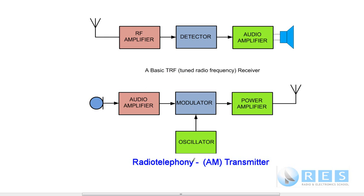Let's just go over the AM transmitter again. Audio comes from the microphone and goes into the modulator. An RF signal from the oscillator also goes into the modulator. The AF, the audio frequency, and the RF from the oscillator mix in the modulator in such a way that the audio produces amplitude variations of the transmitted signal.